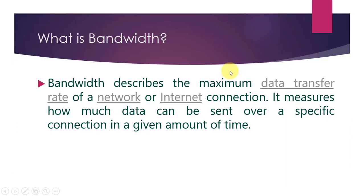First, let us discuss what is bandwidth. Bandwidth describes the maximum data transfer rate of a network or internet connection. It measures how much data can be sent over a specific connection in a given amount of time. There is another definition — the difference between low and high frequency is called bandwidth — but in computer science, we simply refer to how much data we can send over a transmission media.